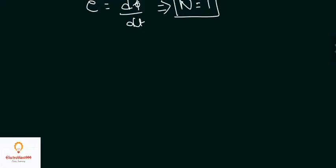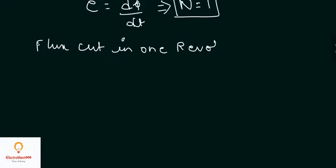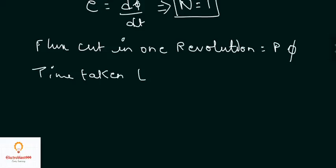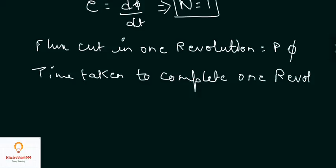Now, if P is the number of poles and phi is the flux per pole, then the flux cut in one revolution is P times phi. The time taken to complete one revolution is equal to 60 divided by N.